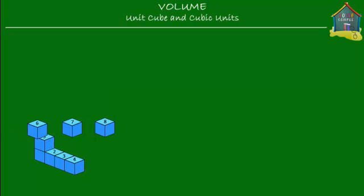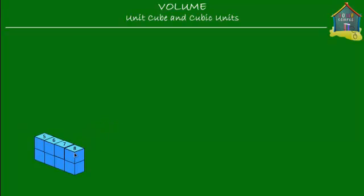We can put this on top of here, this here, and this one here. So what I've done is used these eight unit cubes to form this solid object over here, and the volume of this solid object is equal to eight cubic units because it's made of eight unit cubes.